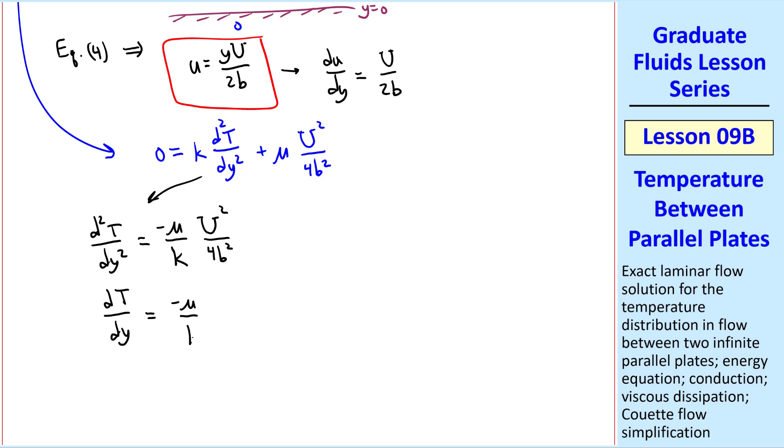And we can integrate d t dy is negative mu over k u squared over 4b squared y plus some constant c1, and then integrating again, we get negative mu over 8k u squared over b squared y squared plus c1y plus c2.